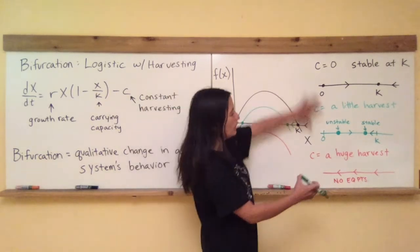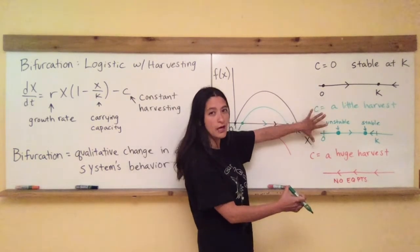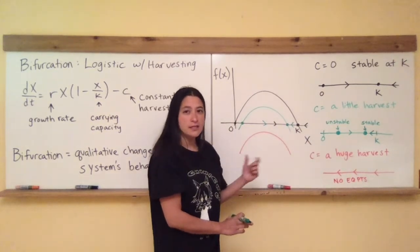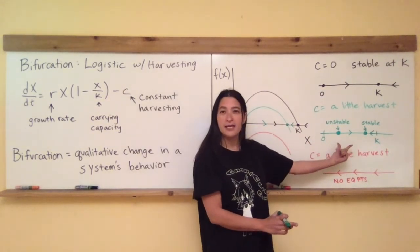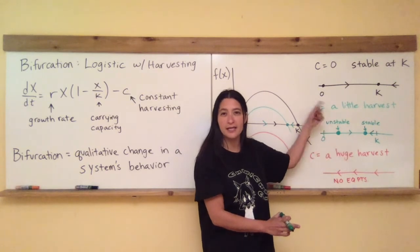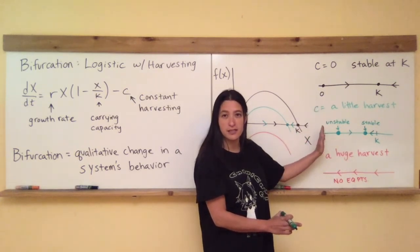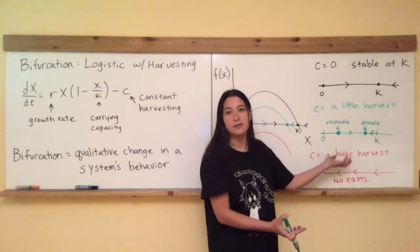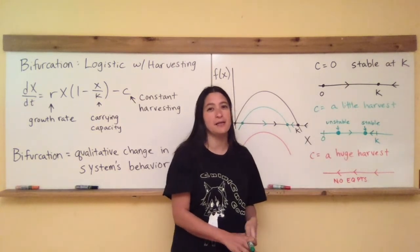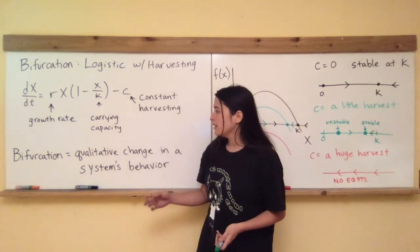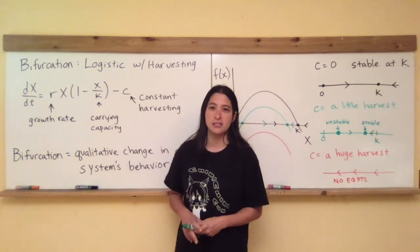So two fixed points, one unstable one to the left, and one stable fixed point to the right. Even though the fixed points moved a little bit, they have the same quality that they had in the black case. There's two of them, and the left one is unstable, and the right one is stable. So it's kind of the same case. It's kind of the same situation when we talk about the qualitative nature of the system.